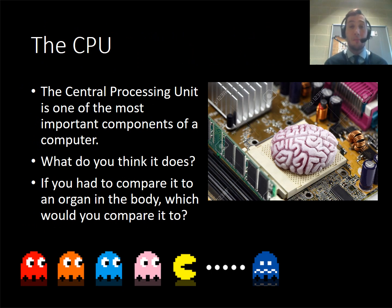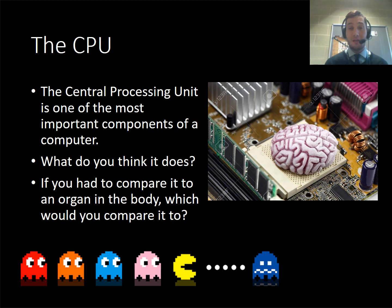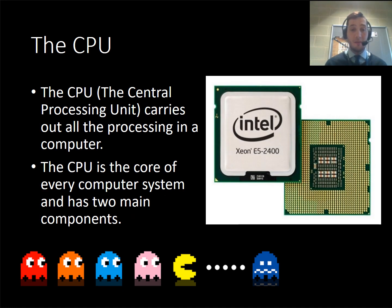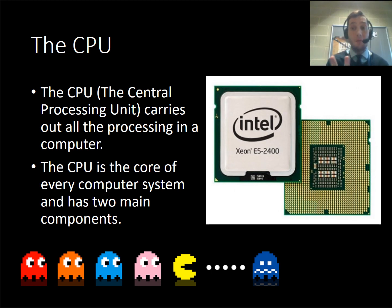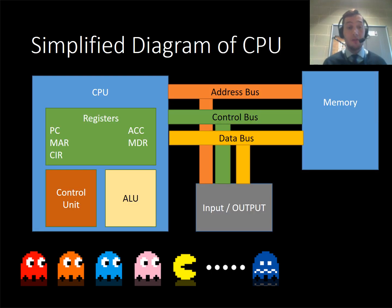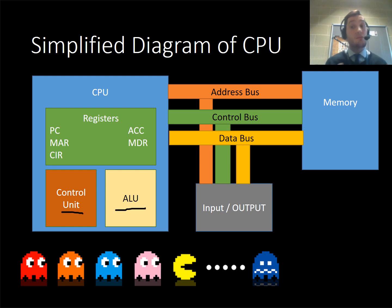The CPU is one of the most important parts of your computer system — one of the most important internal components. Think about it like the organs in your body: there's one that actually gets us doing things. The CPU carries all the processing in the computer — everything coming in and everything going out. It's like the brain, and it has two main components you need to remember for your exam. I have a simplified diagram of the CPU here, and I want to talk first about the control unit and the ALU.